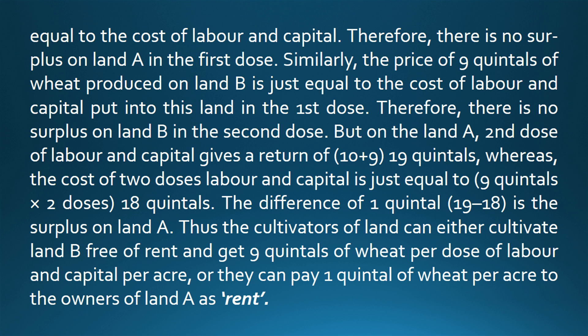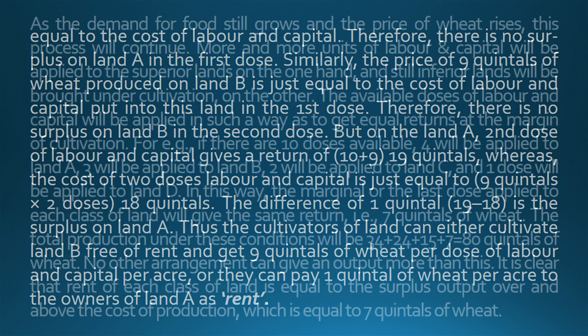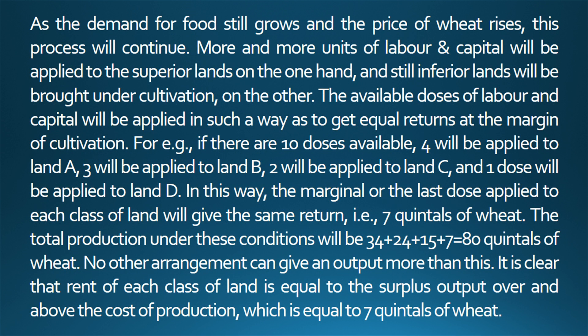But on land A, the second dose of labour and capital gives a return of 10 plus 9, i.e., 19 quintals, whereas the cost of two doses of labour and capital is just equal to 9 quintals multiplied by 2 doses, i.e., 18 quintals. The difference of one quintal (19 minus 18) is the surplus on land A. Thus the cultivators of land can either cultivate land B free of rent and get nine quintals of wheat per dose of labour and capital per acre, or they can pay one quintal of wheat per acre to the owners of land A as rent.